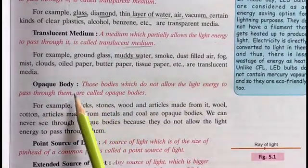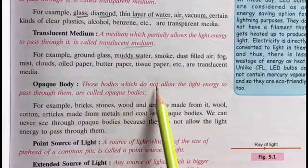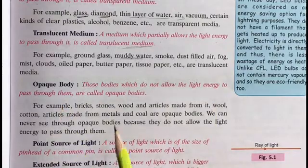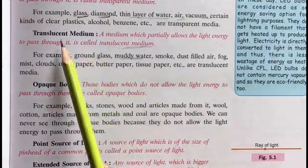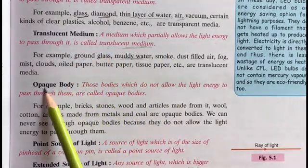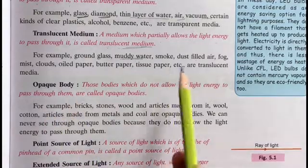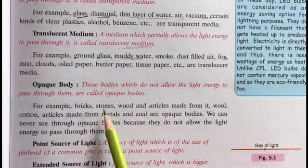Then comes opaque. In opaque, those bodies which do not allow light to pass through them at all. Those bodies which do not allow the light energy to pass through them. So transparent allows fully to pass, translucent allows partially, and opaque doesn't allow light energy to pass through at all. Like wood, stone, and steel.